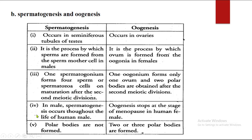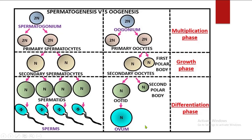In males, spermatogenesis occurs throughout the life after puberty. However, oogenesis stops at a certain age called menopause, usually around 45 to 50 years of age — that is when the monthly cycle stops. In case of spermatogenesis, polar bodies are not formed, whereas in case of oogenesis, polar bodies are formed.